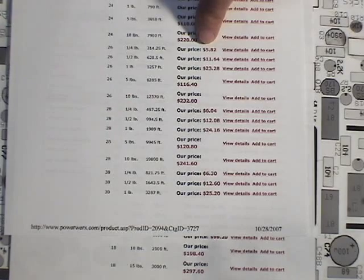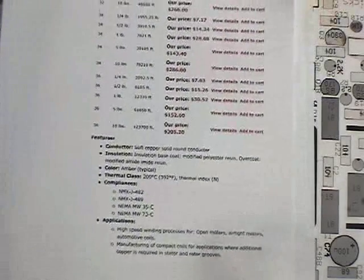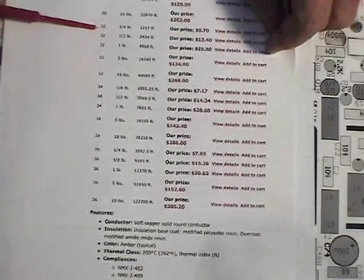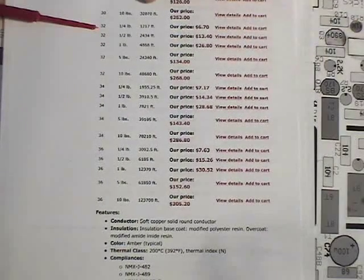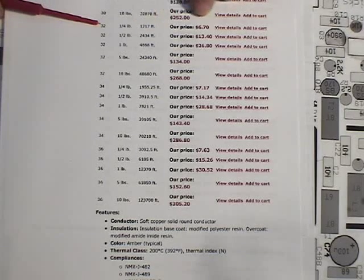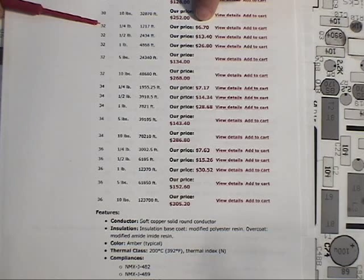They go right on down to any size, all the way down to number 36 here. If you need some 32, a quarter pound spool of 32 has 1,217 feet for $6.70. That's another good place to buy the wire.